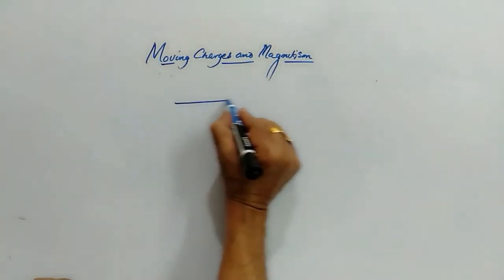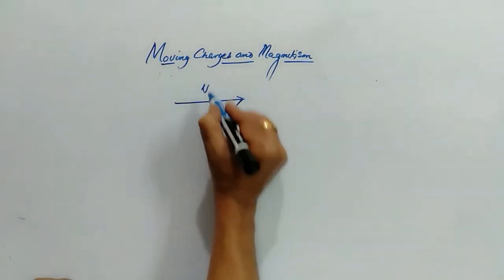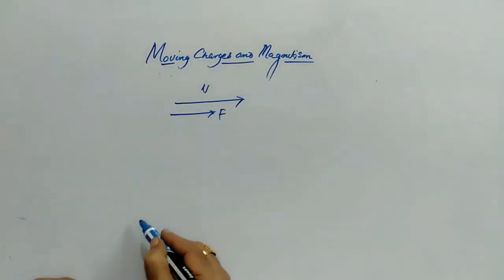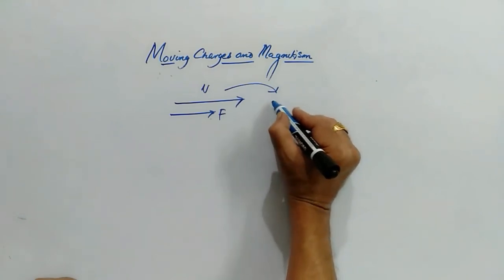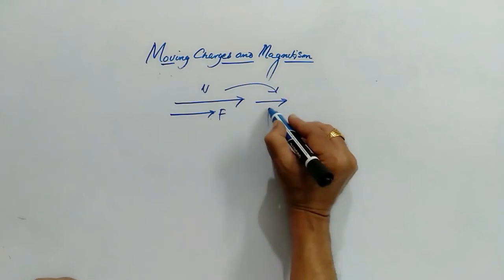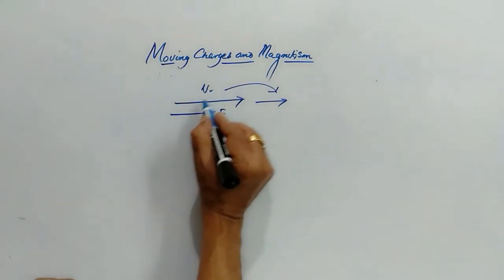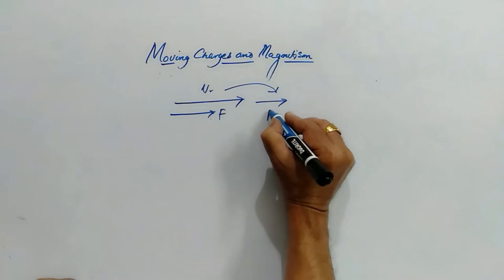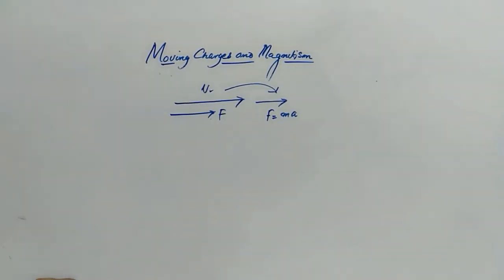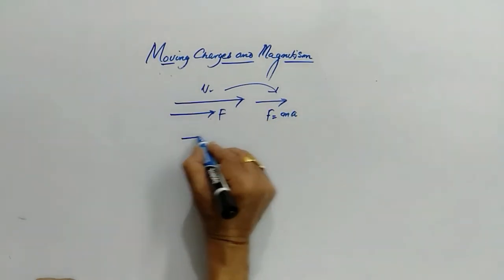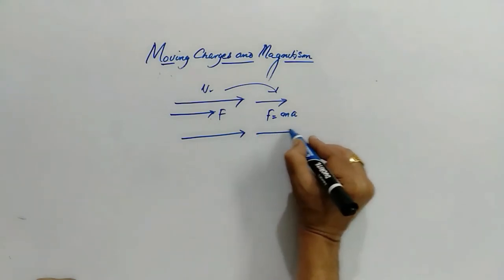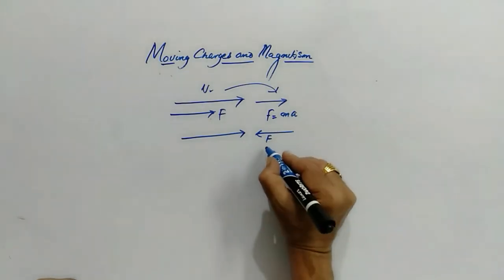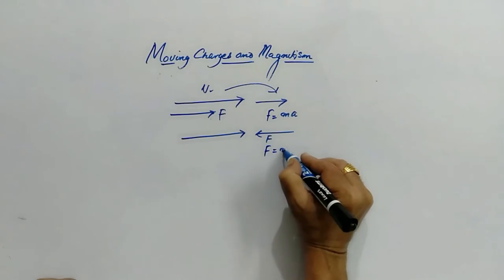Suppose if the velocity of any object is in one direction and the force is also in the same direction, then it will be accelerated motion. When force is applied, velocity increases — that is accelerated motion, as F = ma. Now suppose the initial velocity is in one direction but the force acts opposite to it; then velocity decreases. This is retardation.